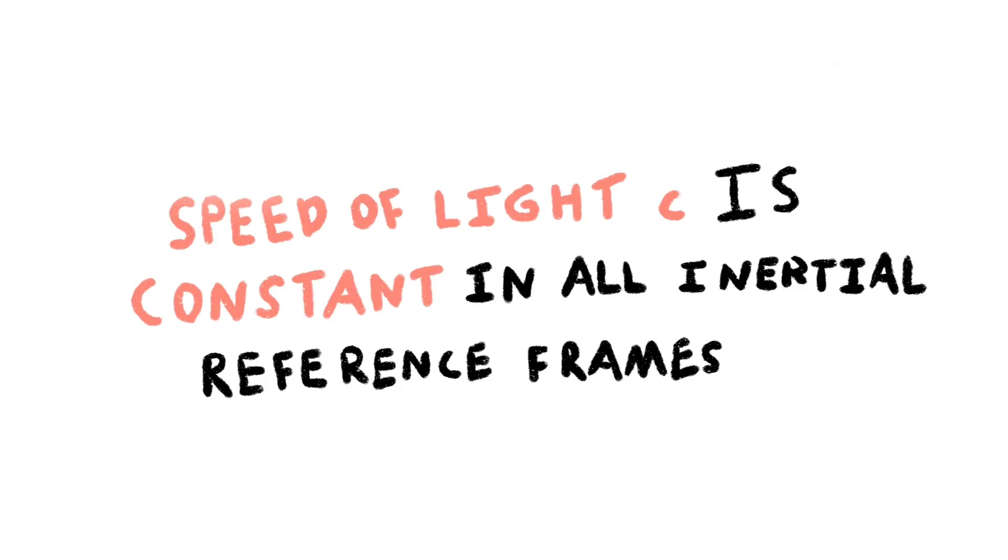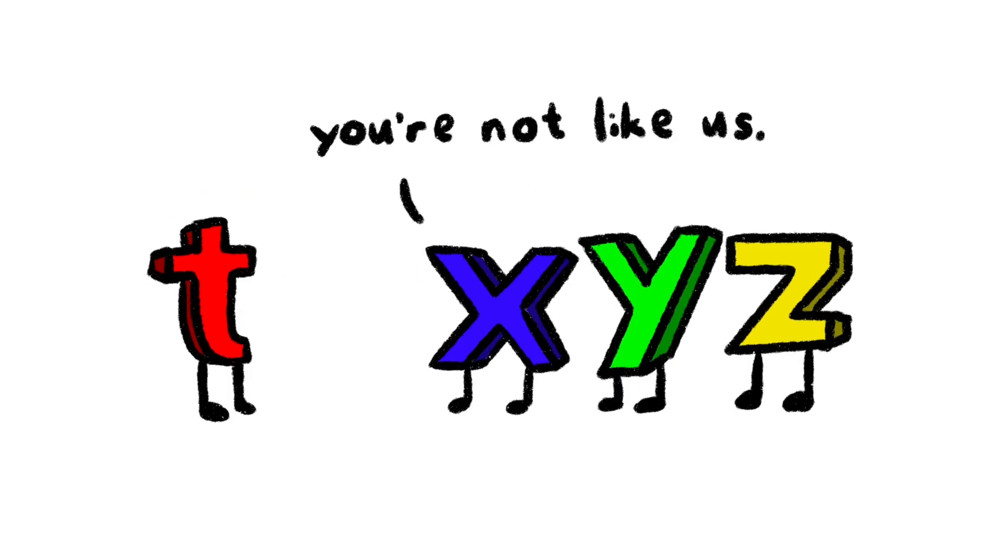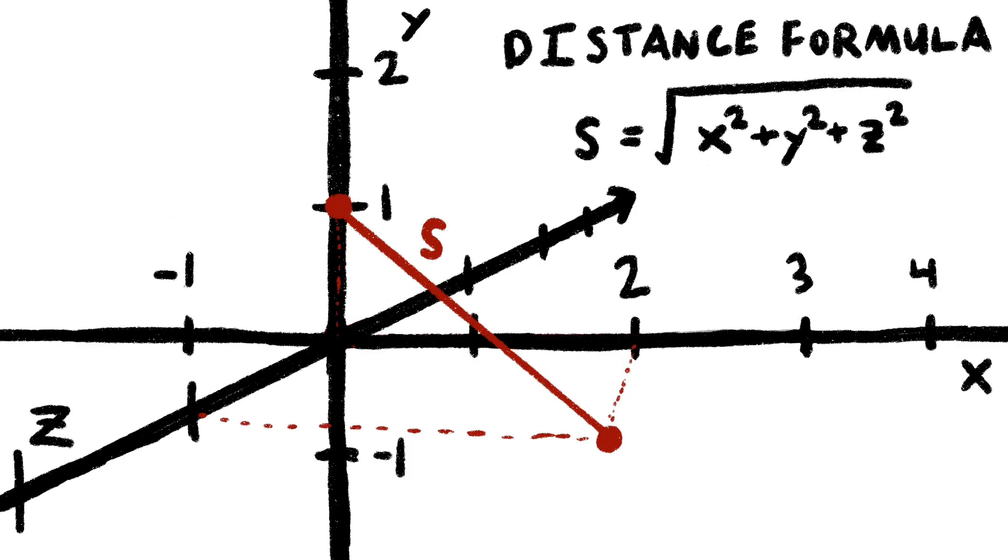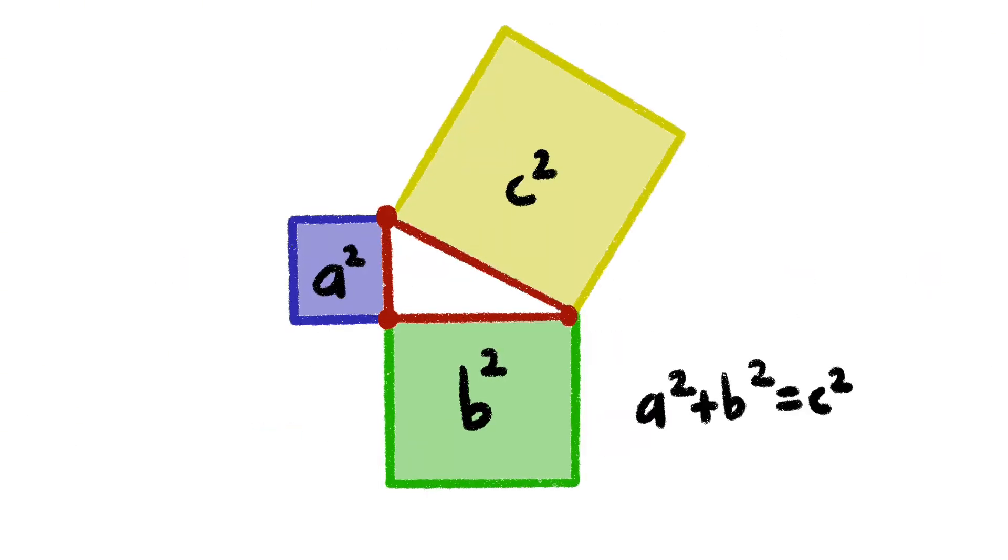Because of the features of special relativity, namely that the speed of light is constant no matter what, this fourth dimension of time is different from that of the spatial dimensions. In order to compute spatial distance, we use the distance formula, which is essentially Pythagorean's theorem.